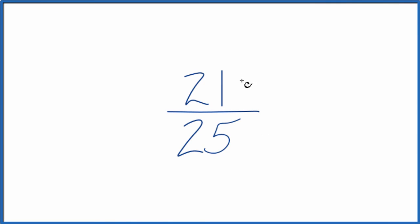All right, let's write the fraction 21 over 25 as a decimal. And there's two ways we could do this.